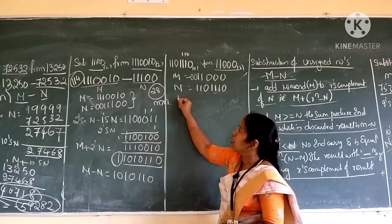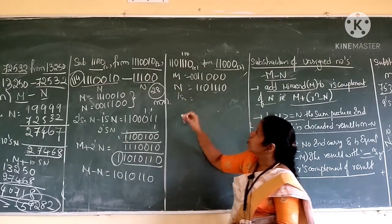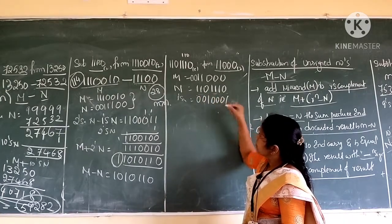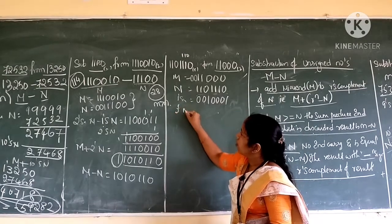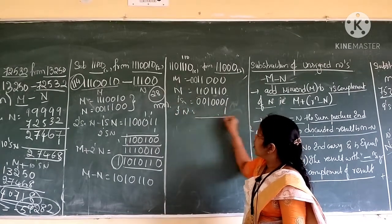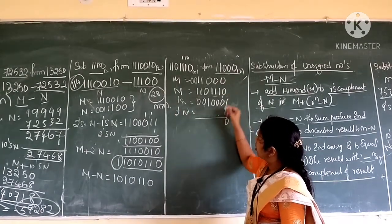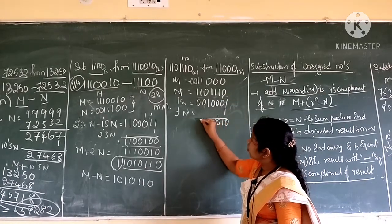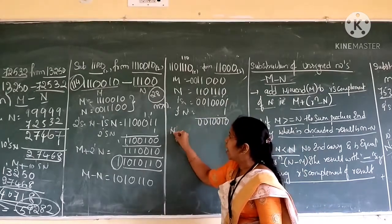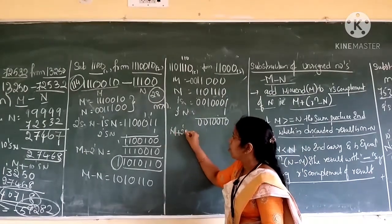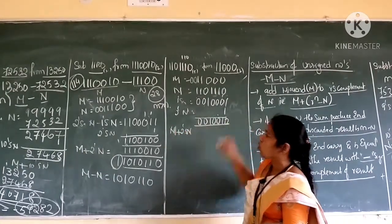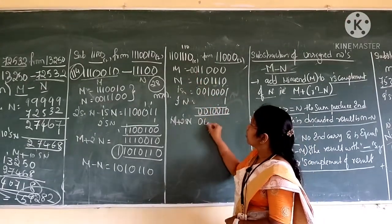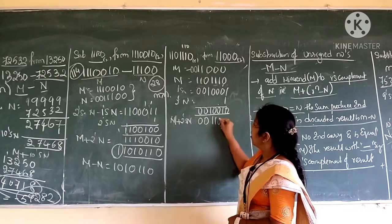First I should find out the 1's complement of n. The 1's complement of n is obtained by converting 1's to 0's and 0's to 1's. Then the 2's complement of n is obtained by adding 1. 1 plus 1 is 0 with carry 1 — giving 1001100. Now m, with three zeros padded on the left, is 0011100 — wait, 0011000.